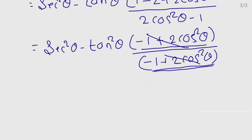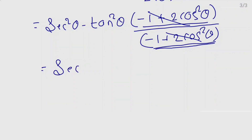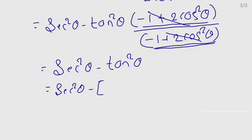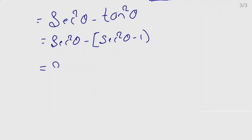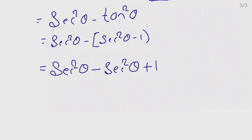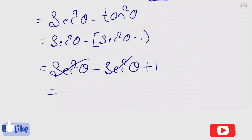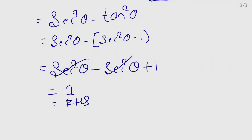After cancellation, the remaining term is sec²θ minus tan²θ. We know the identity tan²θ plus 1 equals sec²θ, so sec²θ minus tan²θ equals 1. Therefore sec²θ minus sec²θ cancels and plus 1 remains, giving us 1, which equals the RHS. Hence proved.